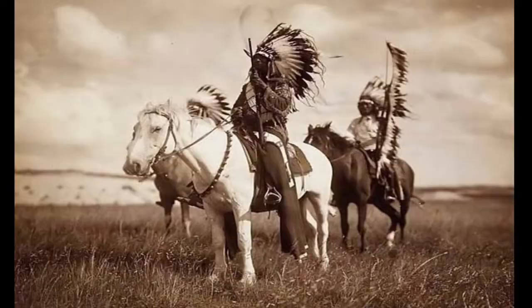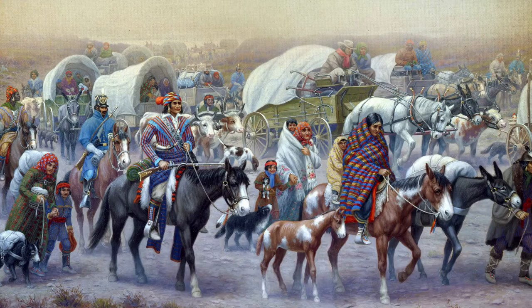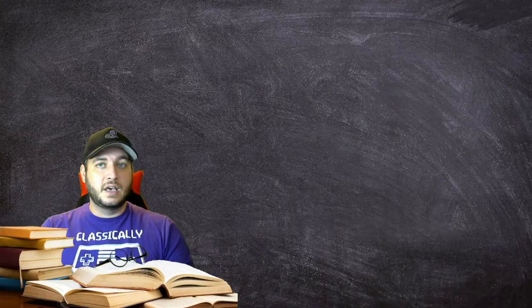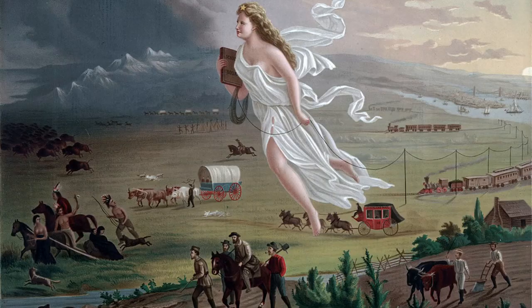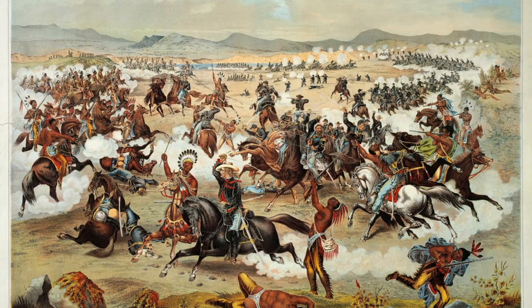Following the Indian Removal Act of 1830, which authorized the forced withdrawal of numerous Indian tribes from the Southeast, the Great Plains and Southwest became home to many natives. The Indian Appropriations Act of 1851 established reservations in the territories that would become Oklahoma, Nebraska, and Kansas. Inspired by the ideology of Manifest Destiny — the belief that European Americans were divinely ordained to settle the whole North American continent — settlers pushed ever further westward, increasingly coming into violent conflict with Native Americans over land and natural resources.